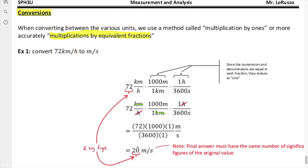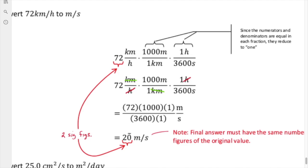Here's how we set it up. The first thing we do is take the unit kilometers per hour and set it up as a fraction, so we have the 72 out front and kilometers per hour. We're going to either focus on changing the kilometers to meters or start with the hours.